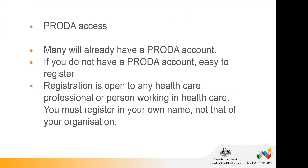Hopefully many of you already have a PRODA account, which will make registering for My Health Record even easier. If you're an NDIS provider or have been claiming through DVA, you're quite likely already using PRODA. If you don't have a PRODA account, log on to the Department of Human Services website and look for the PRODA link. You'll need to provide proof of identity — similar to a 100-point identity check for a bank — with documents such as your passport, driver's licence, or Medicare card.